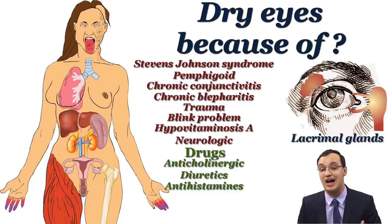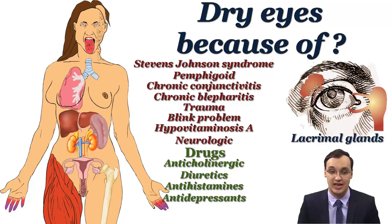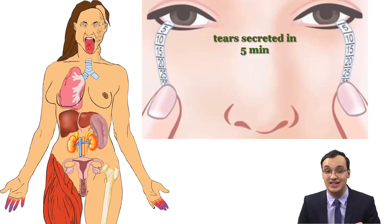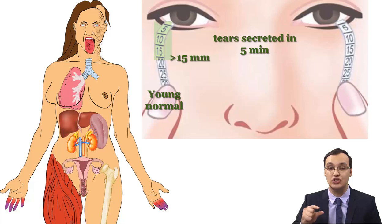We have to do more tests to make a differential diagnosis, as the symptoms by themselves are not enough to say this is Sjogren's syndrome. We can do the Schirmer's test: we put a filter paper strip under each lower eyelid and measure the quantity of tears secreted in 5 minutes. A normal young person moistens more than 15 mm of each strip, whereas in Sjogren's syndrome it's less than 5 mm.